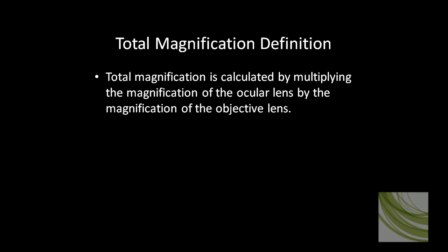This will be a discussion on defining the concept of total magnification and demonstrating how to calculate total magnification. We'll start by defining total magnification, which is calculated by multiplying the magnification of the ocular lens by the magnification of the objective lens. This will tell you exactly how many times larger the image you're looking at is than it is in real life.